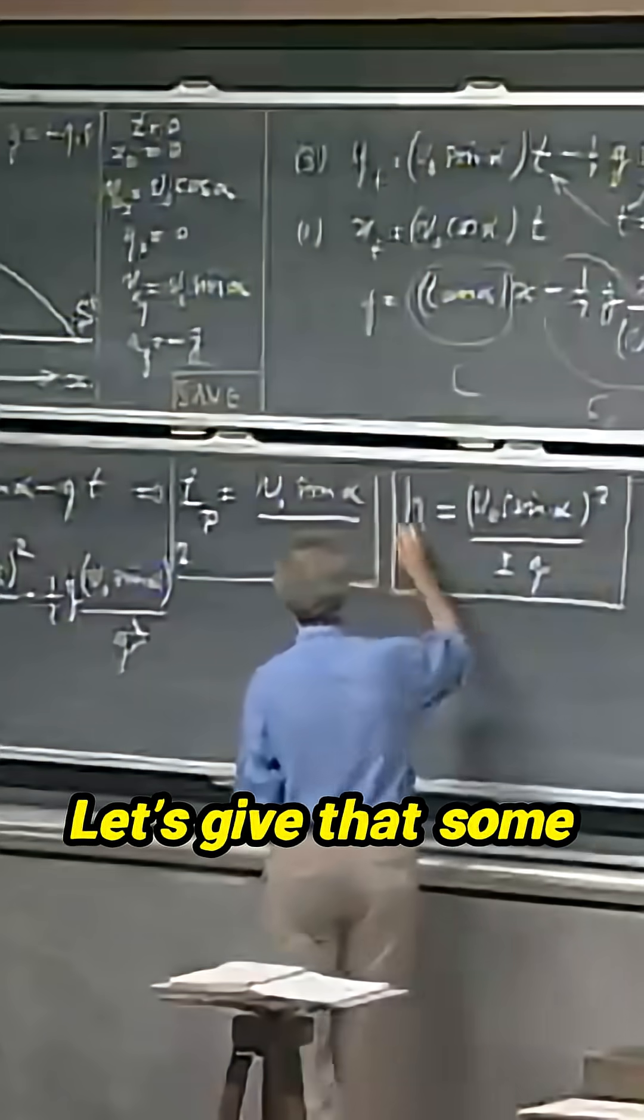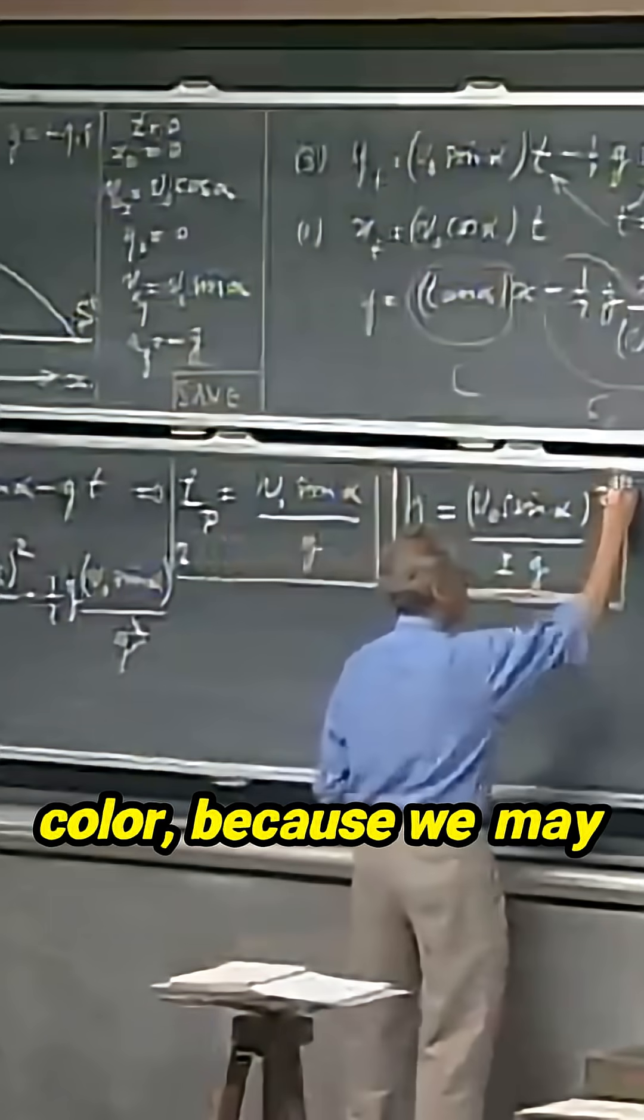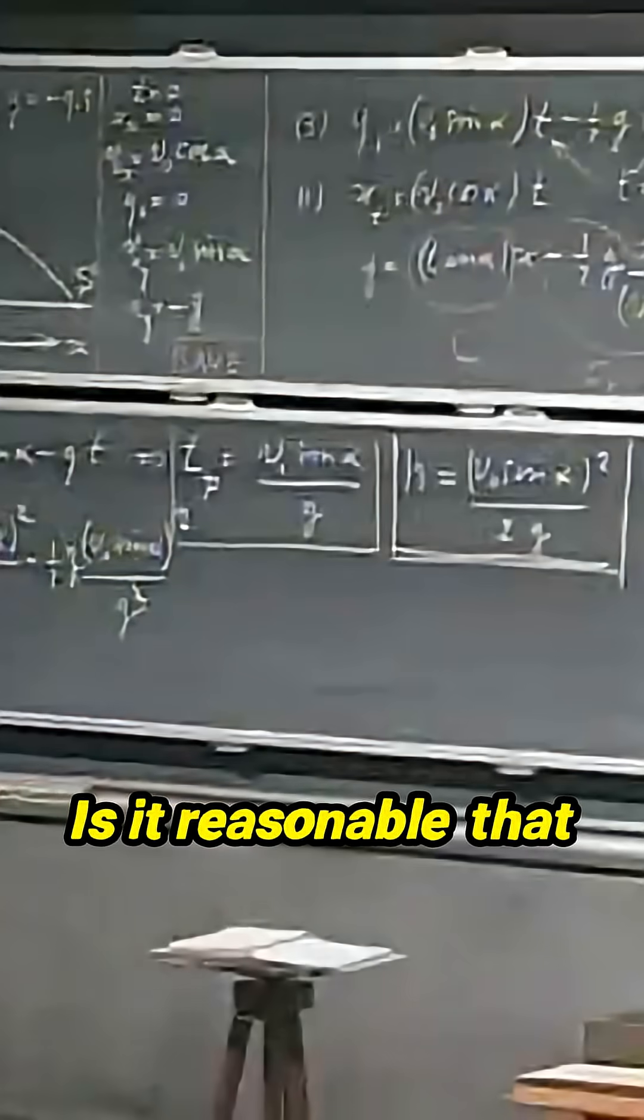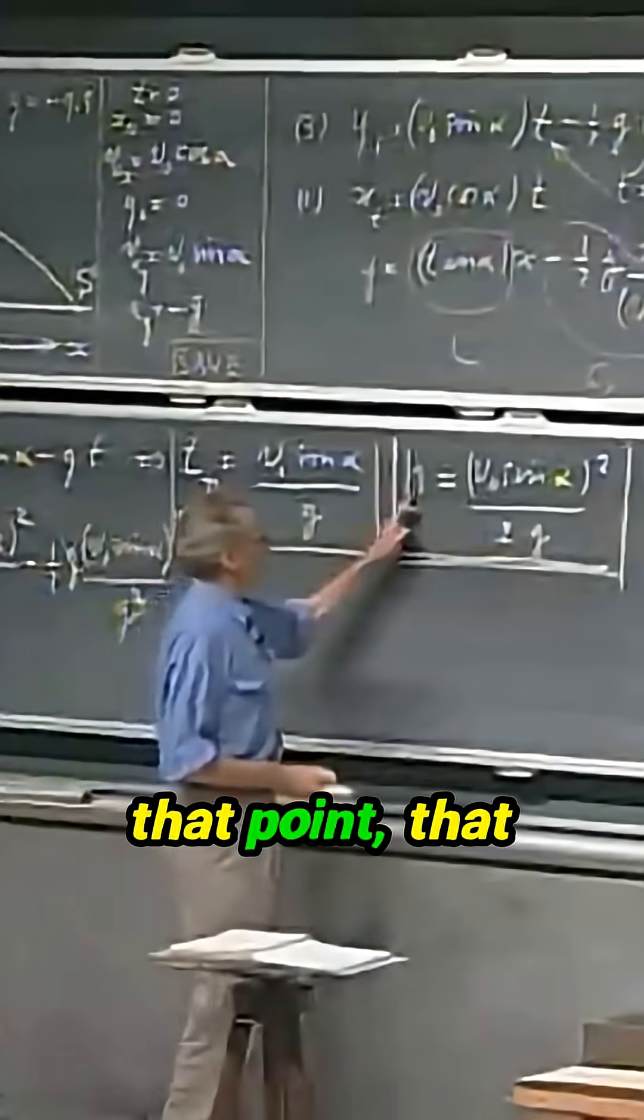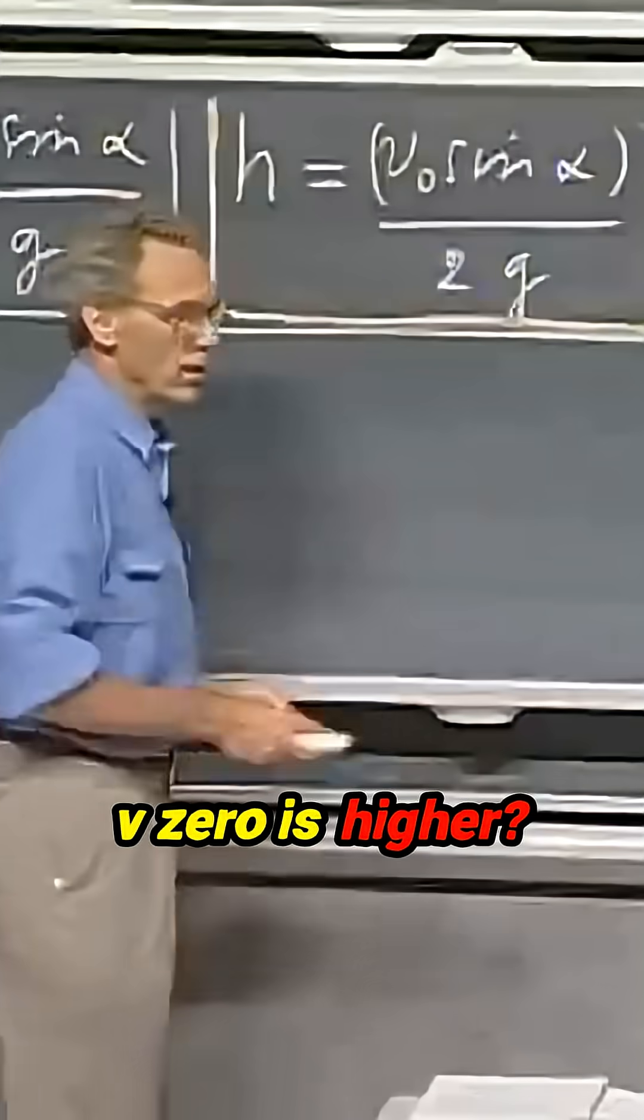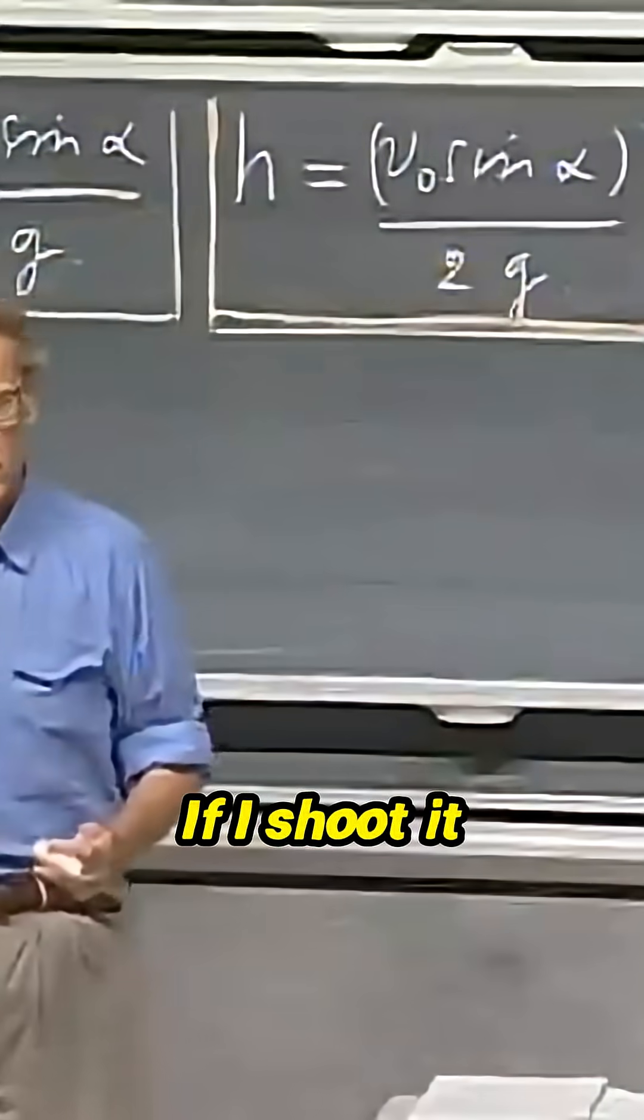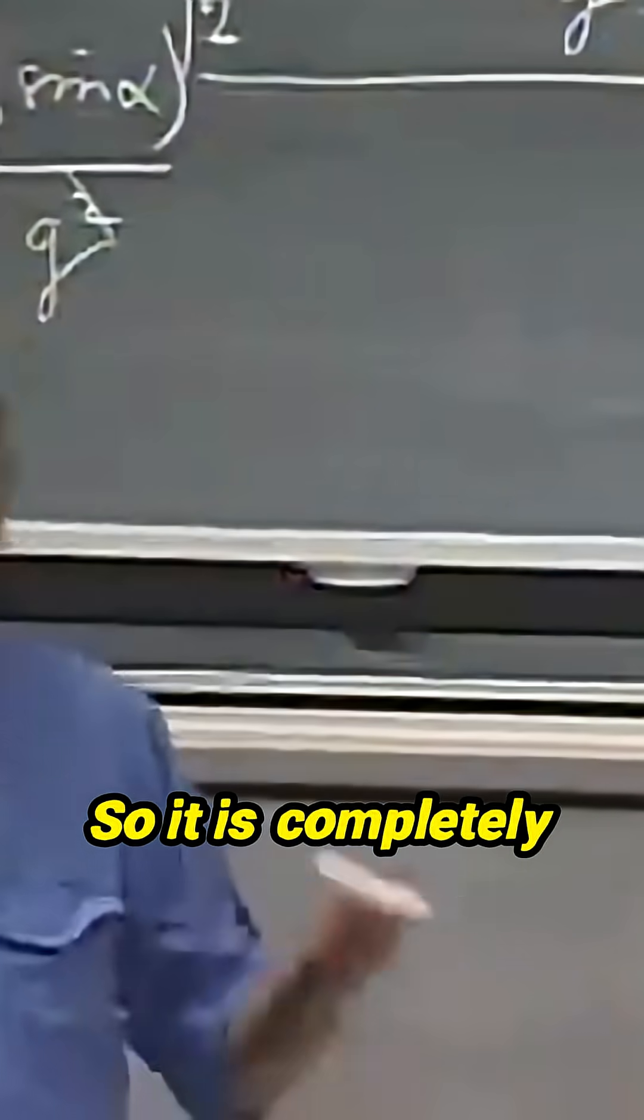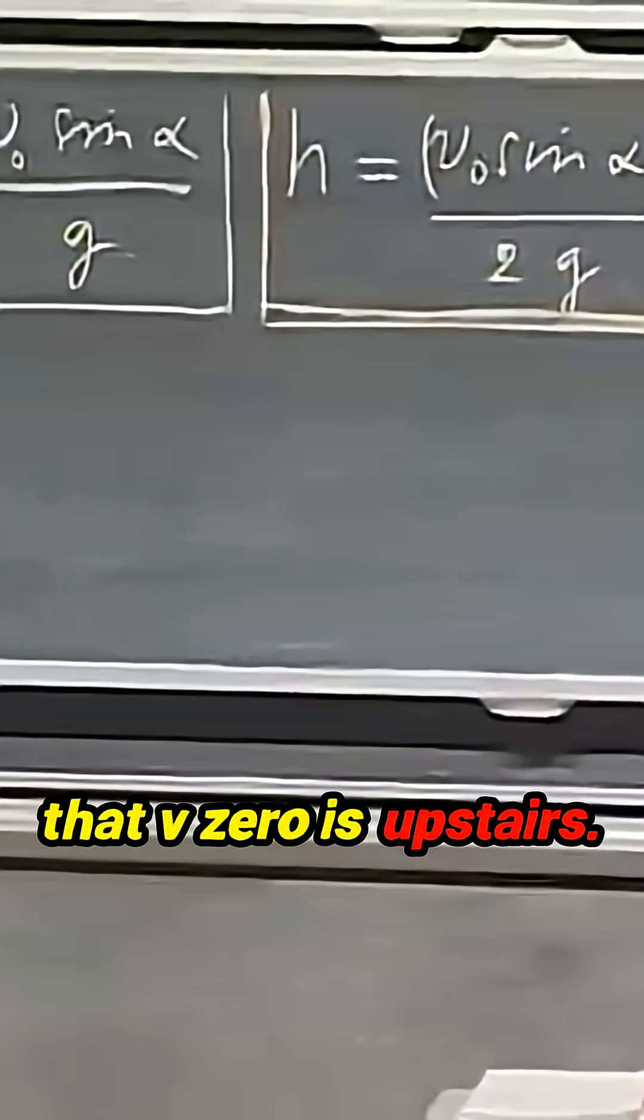Let's give that some color because we may want to keep that. Is it reasonable that that point, that highest point in the sky, gets higher when v zero is higher? Of course. If I shoot it up at a higher speed, of course it will get higher. So it is completely intuitive that v zero is upstairs.